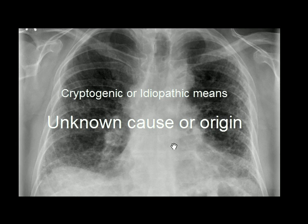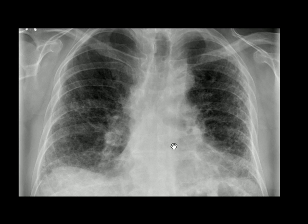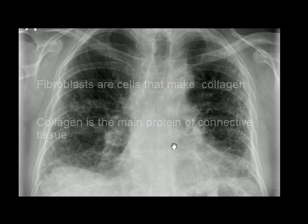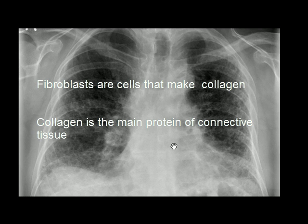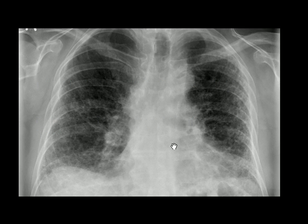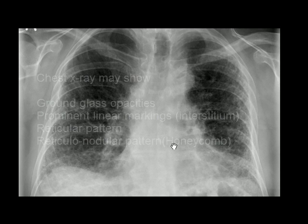Fibrosis literally means scarring of tissue. It is a progressive condition that gets worse with time. In initial stages, cells in the lungs get filled with neutrophils, macrophages, lymphocytes, and monocytes, and later on interstitial spaces get filled with collagen and fibroblasts. Collagen is the main protein of connective tissue and fibroblasts are cells that make collagen. The interstitial space filled with fibrous tissue hinders gas exchange, causing ventilation-perfusion mismatch. In late stages, oxygen therapy is often not helpful as oxygen cannot pass through the collagen-filled interstitium.